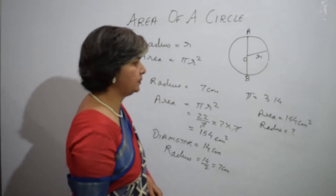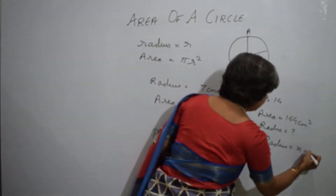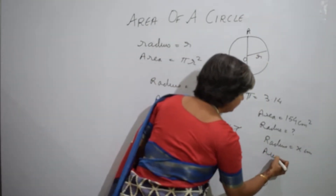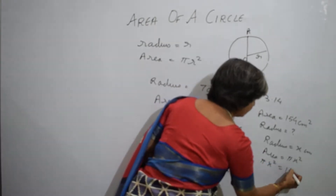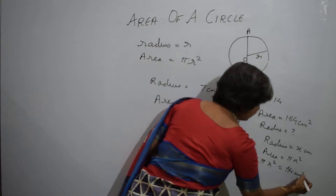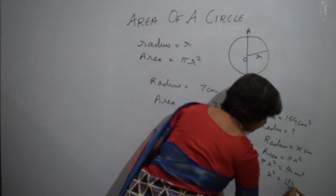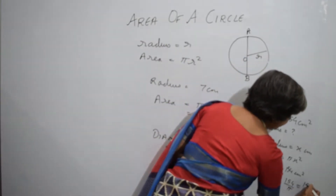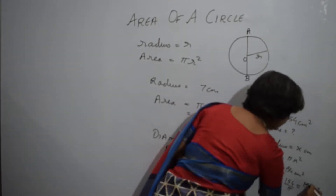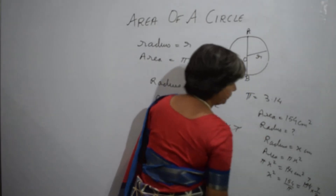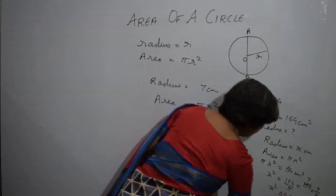Since the radius is not given, I will take radius as x centimeters. Now area will be equal to π x squared, so π x squared equals 154 centimeter square. Therefore x squared equals 154 × 7/22, which gives 49. So x squared is 49, meaning x equals 7 centimeters.